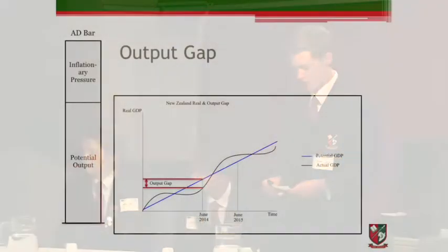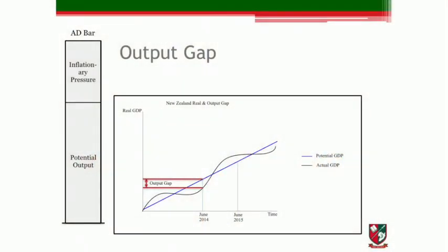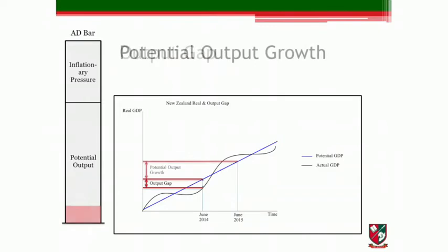Firstly, Katie will talk about potential output, which is how much the economy can grow with its current resources. This will include the output gap and potential output growth. Each factor that increases potential output will add pink to the AD bar.